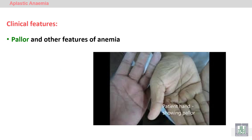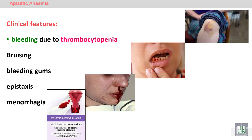Clinically, we will find features of anemia like pallor. We will also find features of thrombocytopenia — bleeding from different sites of the body, bruising, bleeding gums, epistaxis (bleeding from the nose), and menorrhagia, which is excessive uterine bleeding in females.